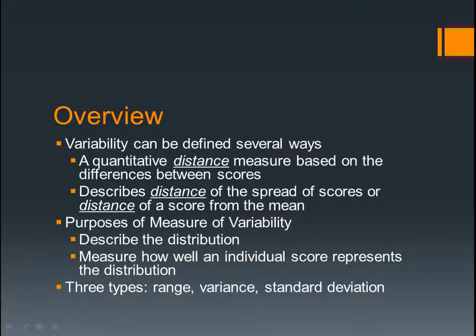Okay, overview. Variability can be defined several ways. A couple of the main ones are: it is a quantitative — meaning numbers — quantitative distance measure based on the differences between scores, and it describes the distance of the spread of scores, or distance of the score from a median. So distance is underlined on all three of those, and that's the main thing you need to remember about it.